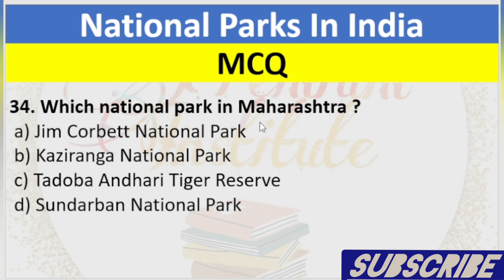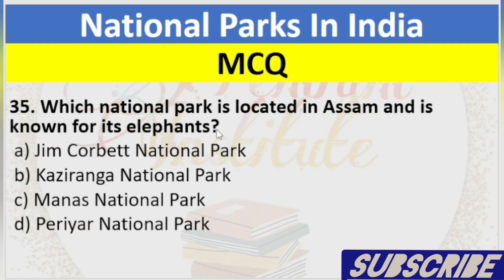Question 34: Which National Park is in Maharashtra? A. Jim Corbett National Park, B. Kaziranga National Park, C. Tadoba Andhari Tiger Reserve, D. Sundarbans National Park. Answer: C. Tadoba Andhari Tiger Reserve.